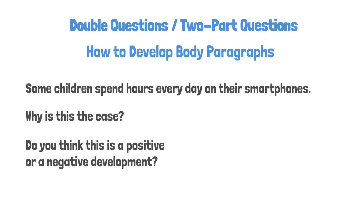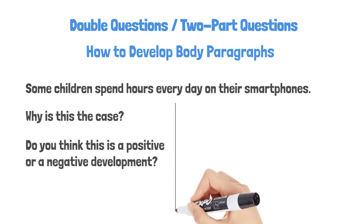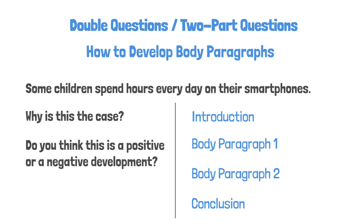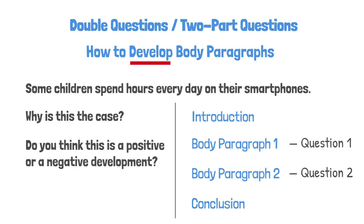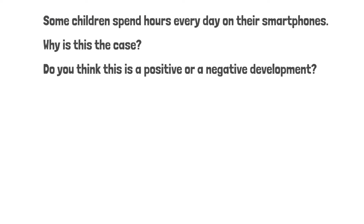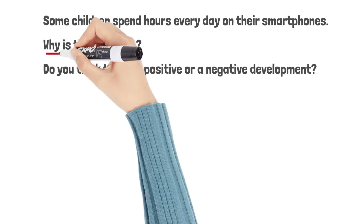The structure of a double question essay is actually very simple. We simply answer the first question in body paragraph 1, and answer the second question in body paragraph 2. But developing your paragraphs is definitely not easy. Let's start with the first question.